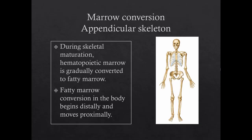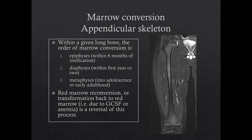During maturation, hematopoietic marrow is gradually converted to fatty marrow. In the appendicular skeleton, this process begins distally and moves proximally, so the phalanges are the first to convert and the proximal hips and femurs are the last. Within any given tubular bone, there is also a specific order: first, the epiphyses convert to fatty marrow within six months of ossifying; second, the diaphyses convert, usually within the first year or two of life; and last, the metaphyses convert gradually up into adolescence or even adulthood.